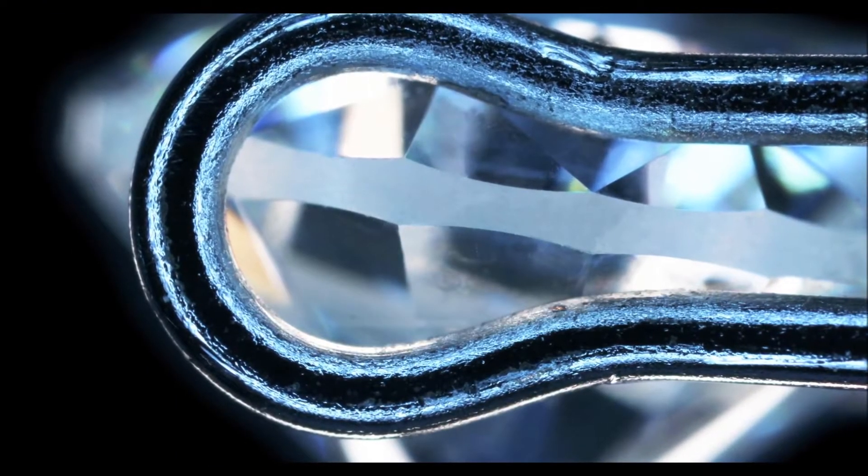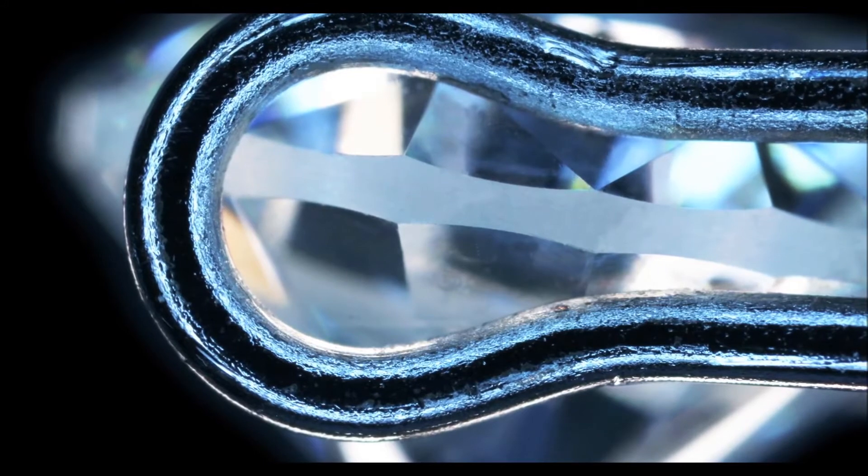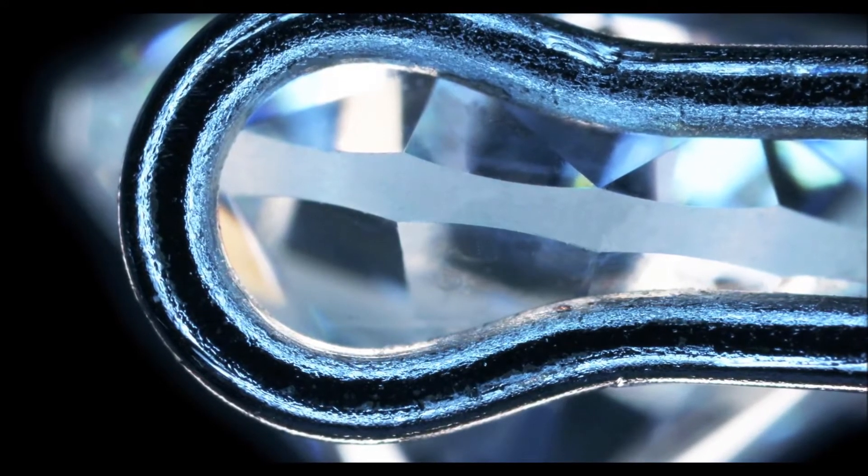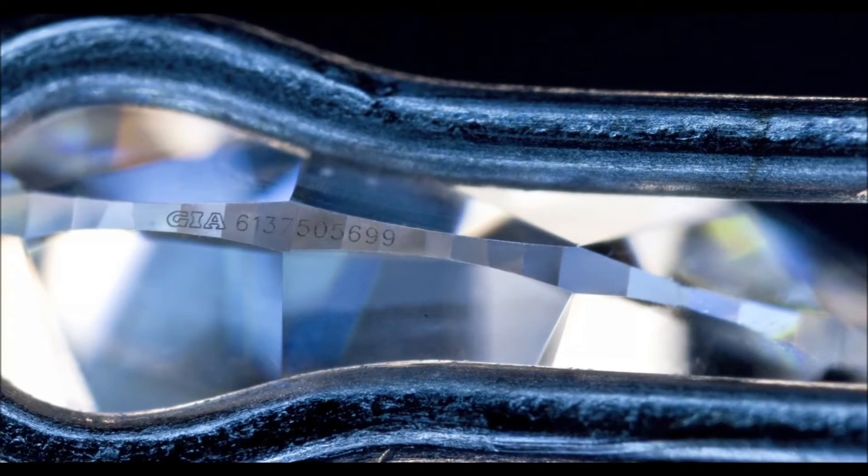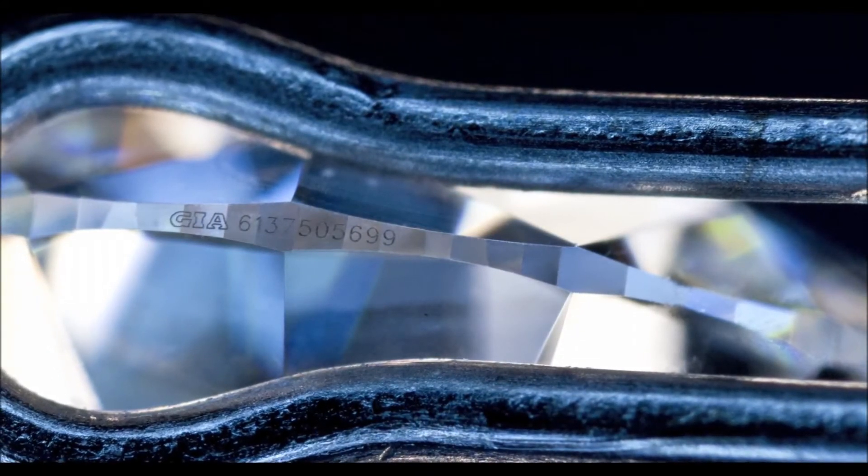This process leaves a matte-like finish on the girdle of the diamond. The girdle can be left in this form, which is called a brooted girdle, or a series of small facets can be polished onto the girdle, giving a faceted girdle.